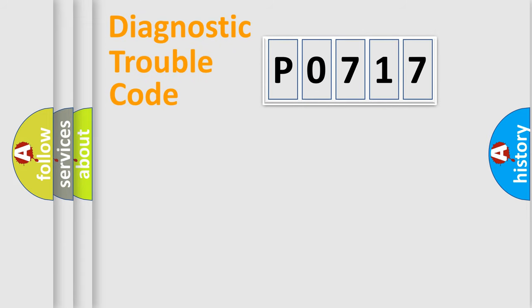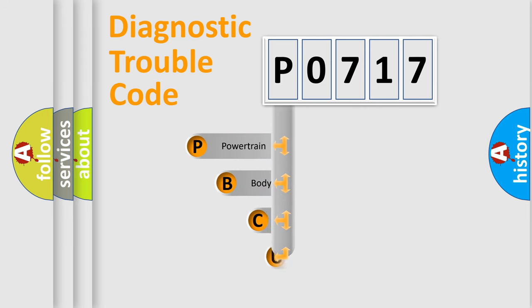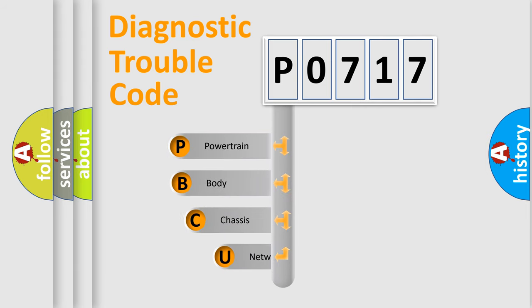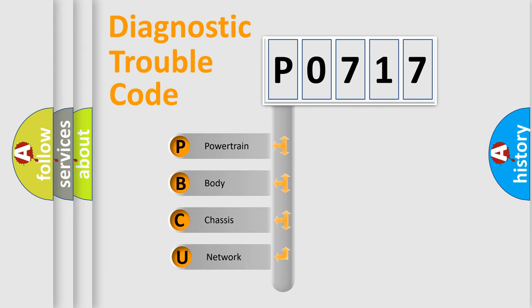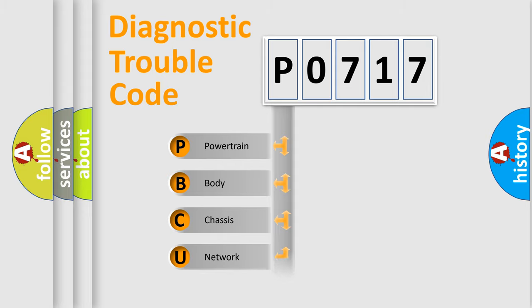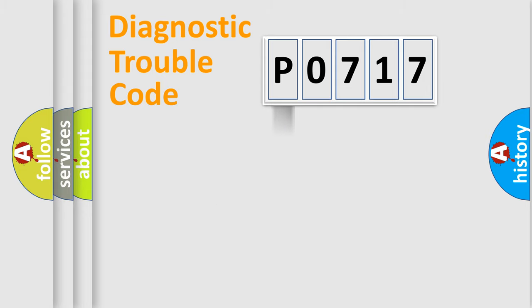Let's do this. First, let's look at the history of diagnostic fault code composition according to the OBD2 protocol, which is unified for all automakers since 2000. We divide the electric system of an automobile into four basic units: Powertrain, Body, Chassis, and Network.